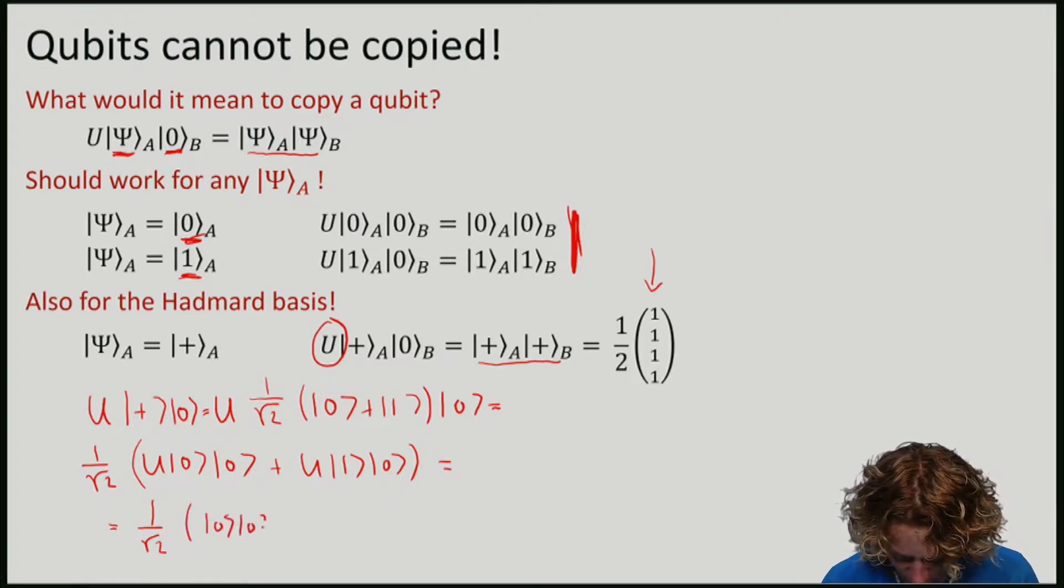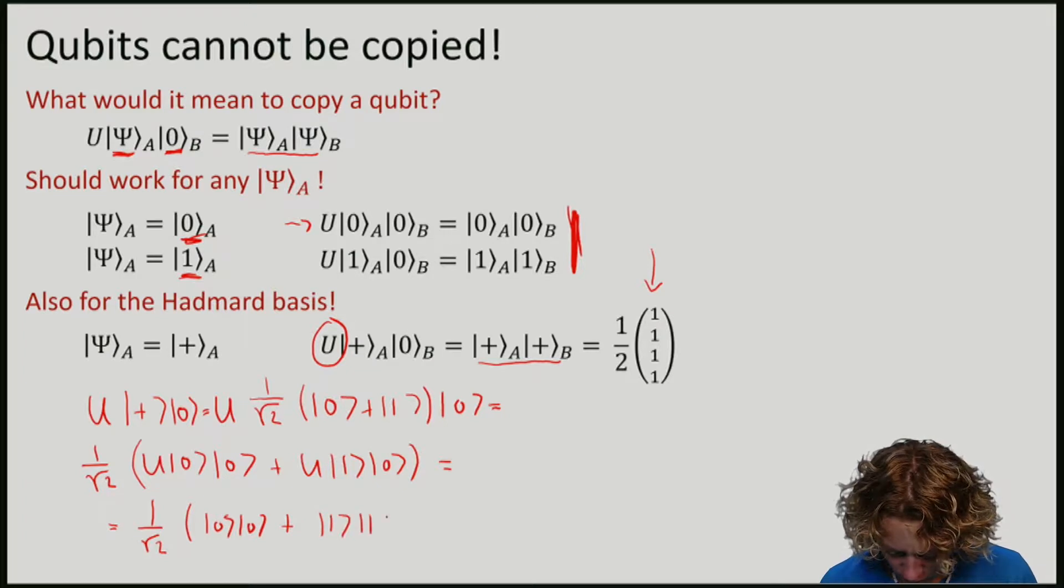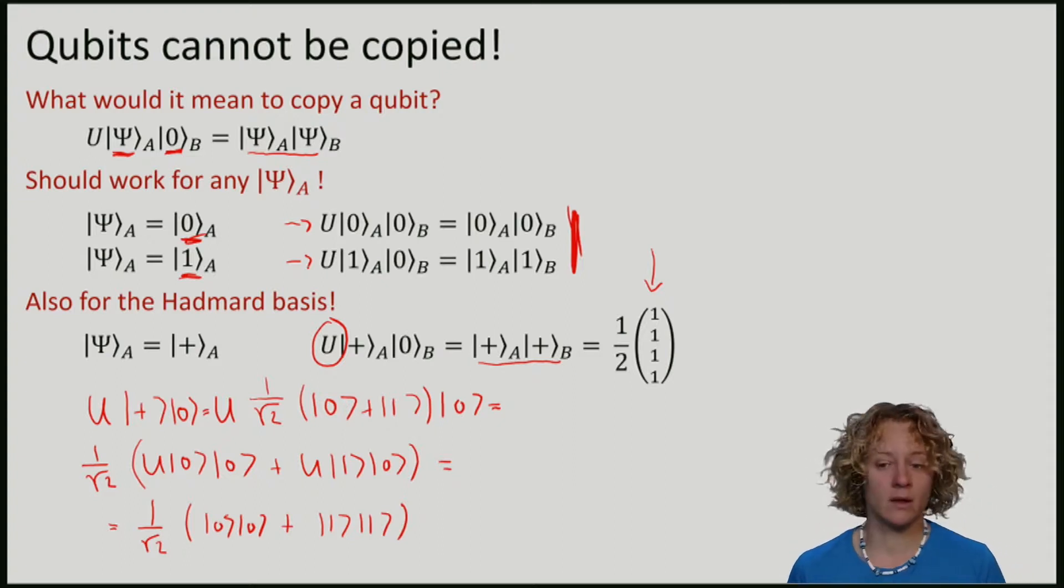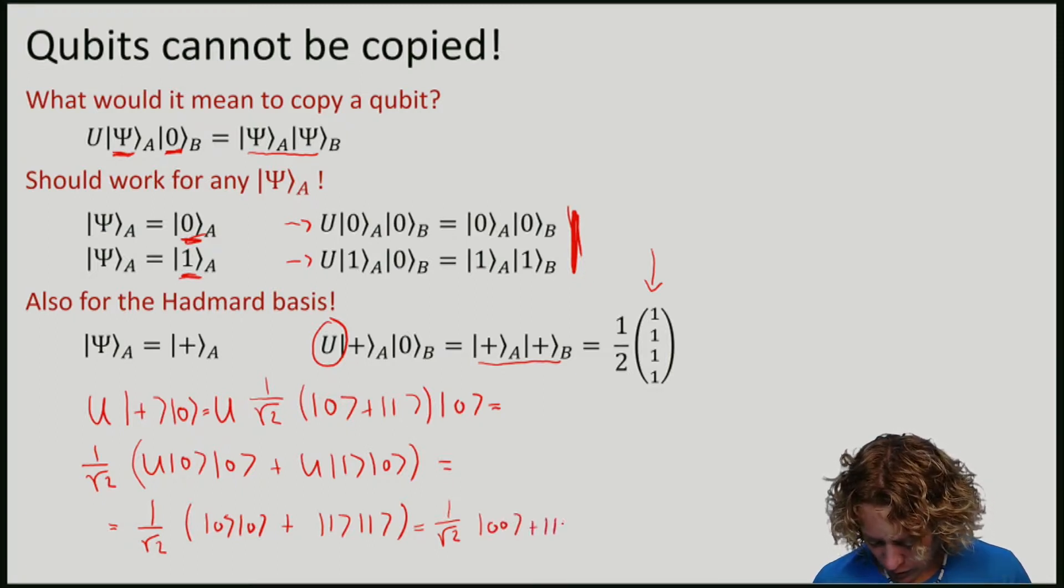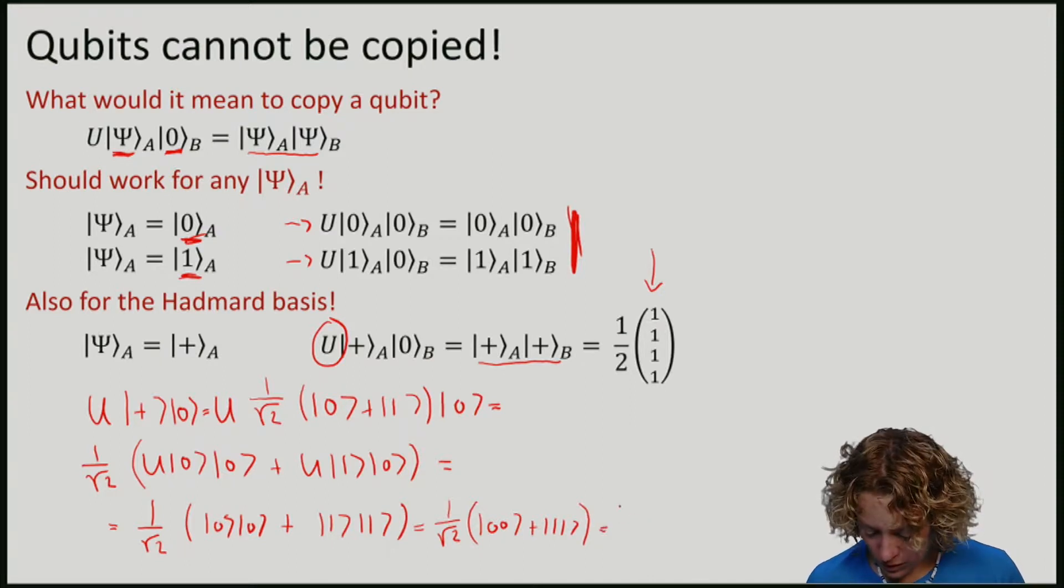This should give |0⟩|0⟩ from here, and |1⟩|1⟩ from there. So if I write this out, remembering the elements of the standard basis, this is |0⟩|0⟩ plus |1⟩|1⟩, which is 1/√2(|00⟩ + |11⟩).